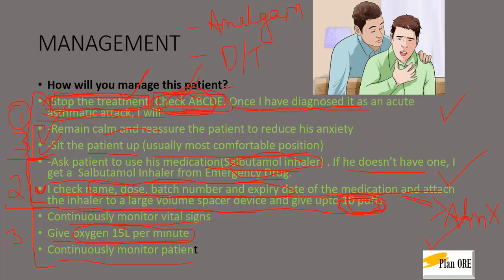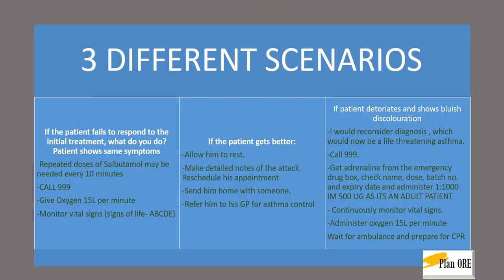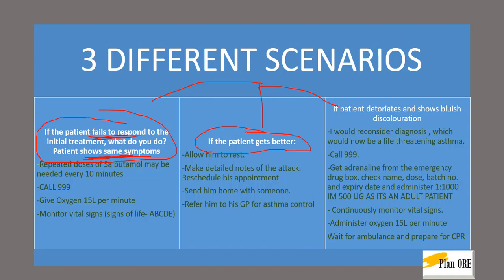If you learn every medical emergency in this way, it becomes easier to remember during the exam. After this, the examiner may ask you any one or all three of the following follow-up scenarios. He may ask: the drug fails to respond and the patient is showing the same symptoms — what will you do? Or: the patient is now getting better — what will you do? Or: the patient is deteriorating and showing bluish discoloration — what will you do? So it's either the same, improving, or deteriorating.